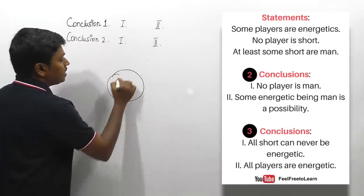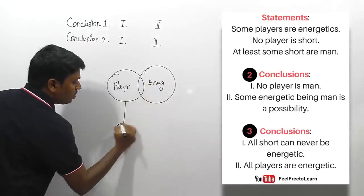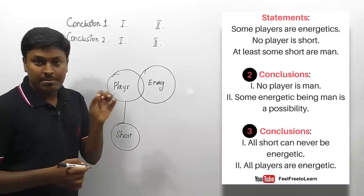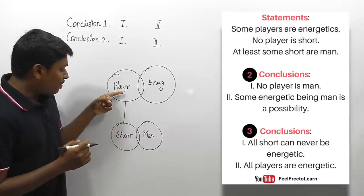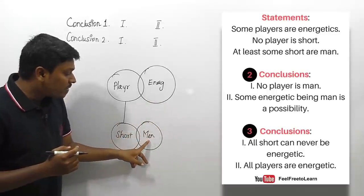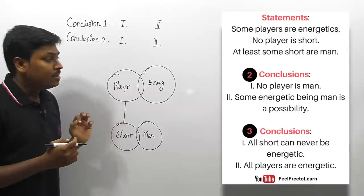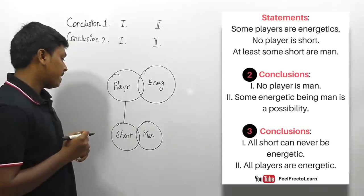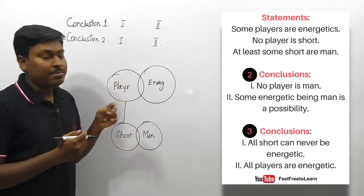Next question. The statements are: 'some players are energetic,' 'no player is short,' and 'at least some short are men' — the meaning of 'at least some' is 'some,' so some short are men. From the Venn diagram: no player is short, but there is a possibility of connecting short and energetic, men and energetic, and men and player. For conclusion one: 'no player is man' — there is a possible connection between men and player, so this is wrong.